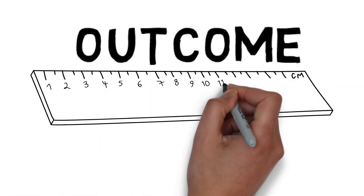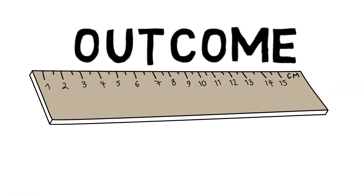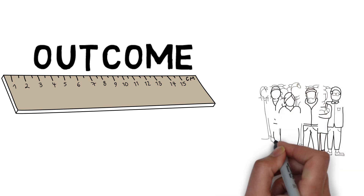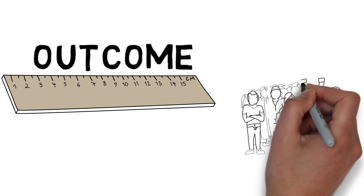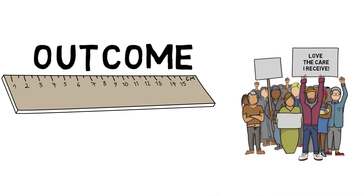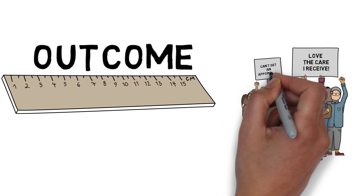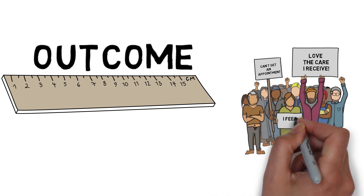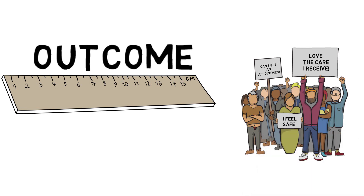An outcome measure tells us how the system is performing, and in good outcome measures we should hear the voice of the patient. An outcome measure should answer the 'so what' question and tell us information about something that is important to the patient. An outcome measure helps us learn about our system and whether we are fulfilling our aim.